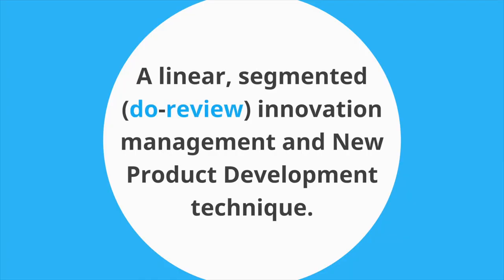What is the phase gate process? The phase gate process, also referred to as a stage gate, is a project management technique in which an initiative or project is divided into distinct stages or phases separated by decision points known as gates. It is a segmented, do-review innovation management and new product development technique used to efficiently manage resources, prioritize initiatives, and lead a project from early ideation through development and prototyping to launch.